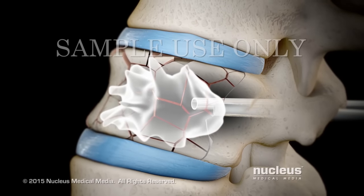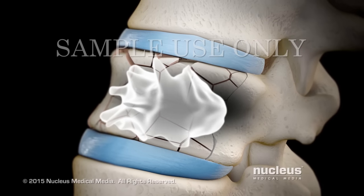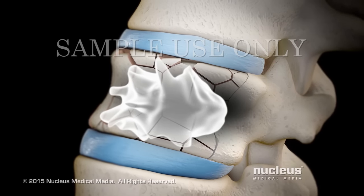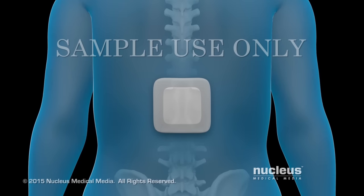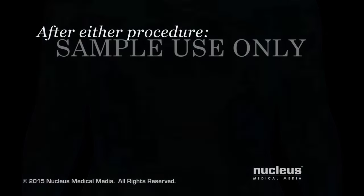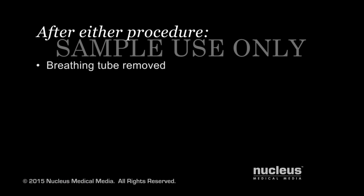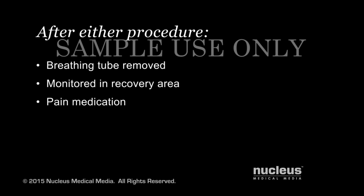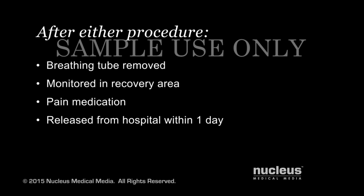At the end of either procedure, your doctor will remove each cannula and cover the tiny skin punctures with a sterile bandage. After either procedure, your breathing tube will be removed if general anesthesia was used. You will be taken to the recovery area for monitoring. Pain medication will be given as needed. You may be released from the hospital the same day or within one day after either procedure.